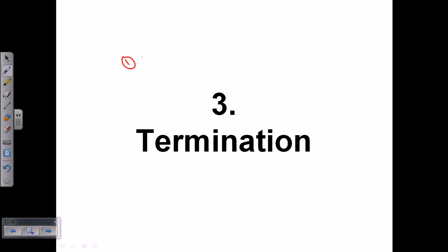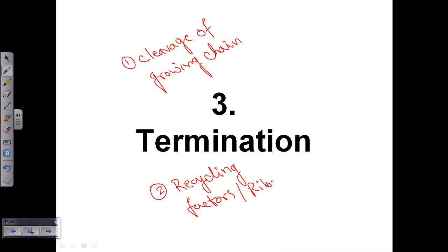First stage is the cleavage of the growing chain, or you can call it the hydrolysis of the growing polypeptide chain. And the second thing is the release or recycling of factors and ribosomes. So these are the two phases for termination in eukaryotic translation.